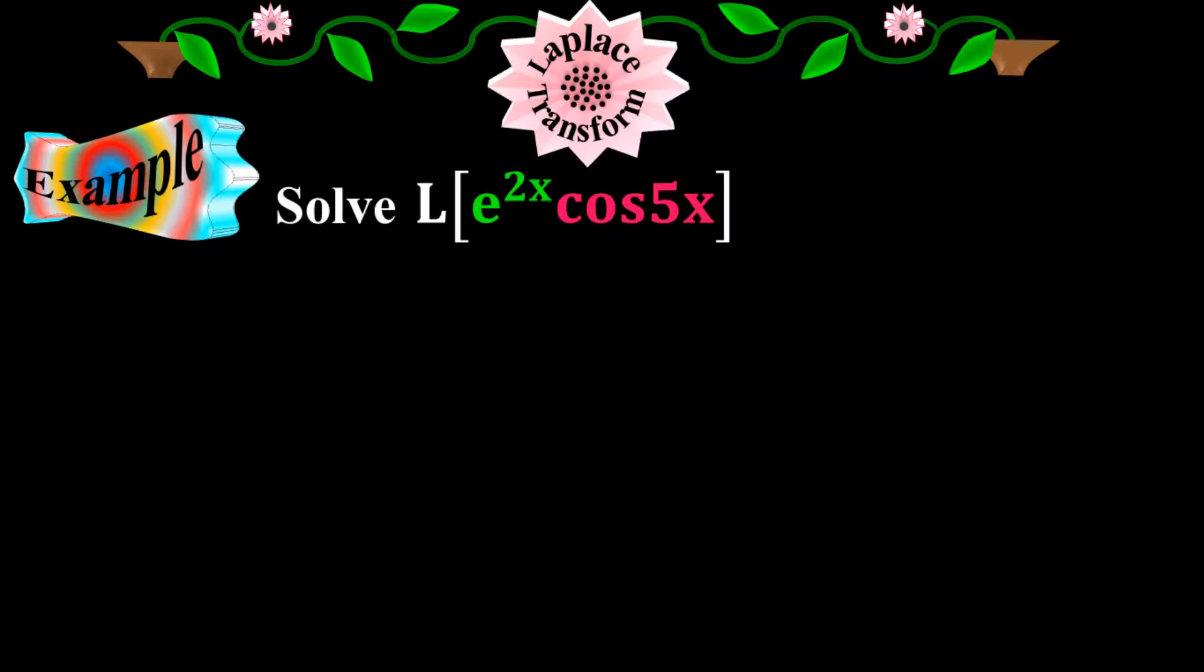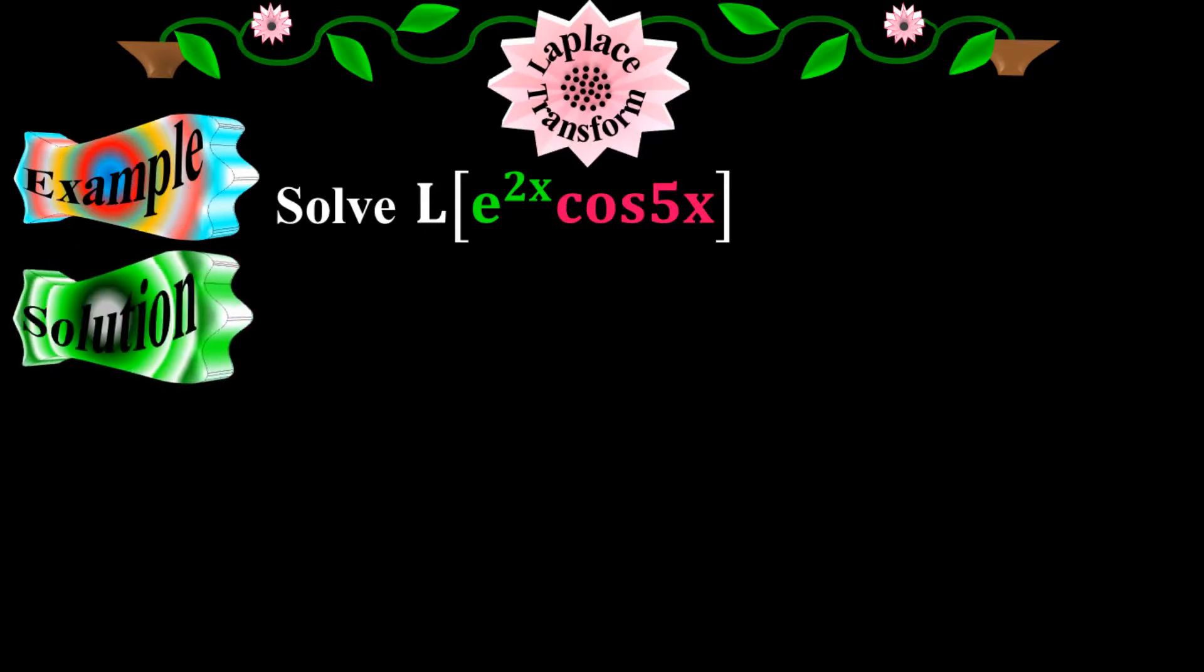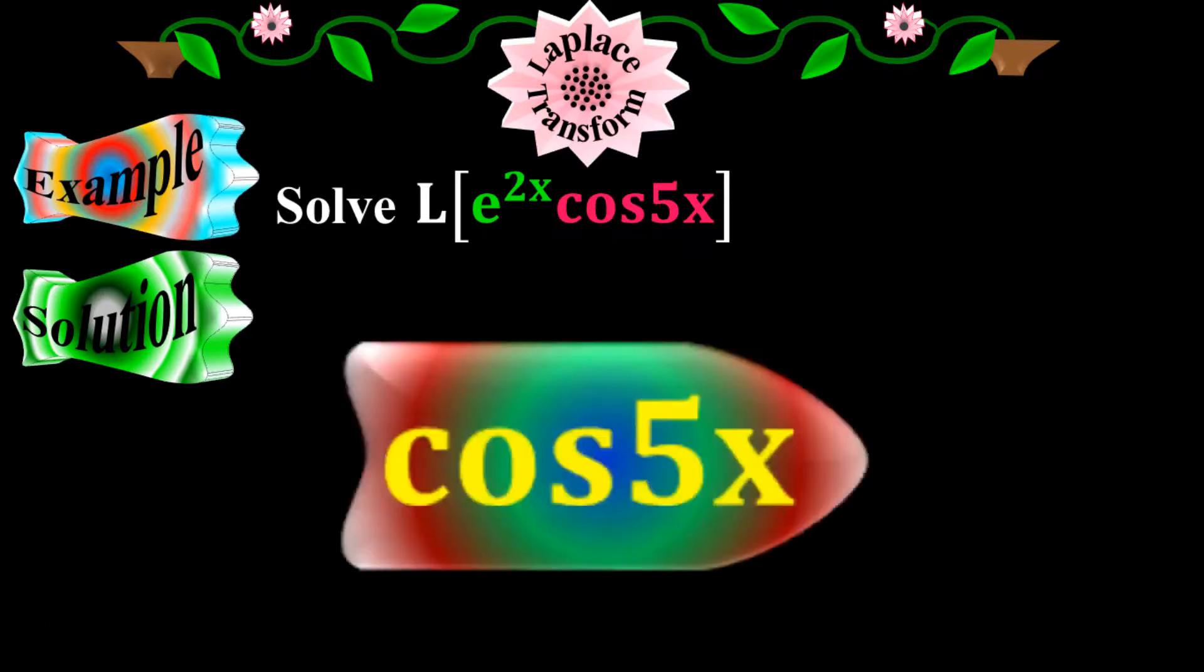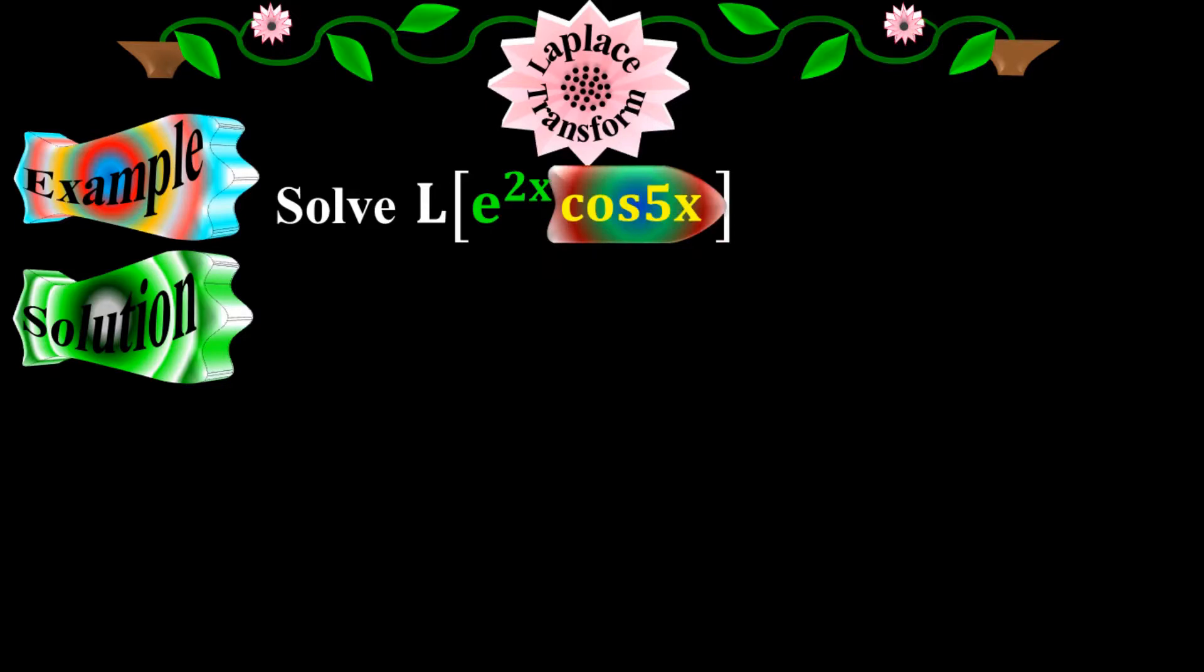Let me find the Laplace here. Solution. Since f of x is the product of two elementary functions, therefore I'm going to find them individually first. Let me take first cos 5x which is the trigonometric function and I also call it fourth elementary function.